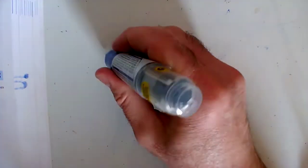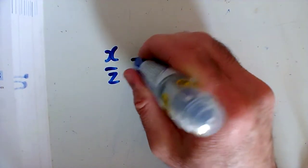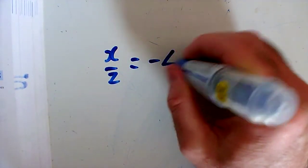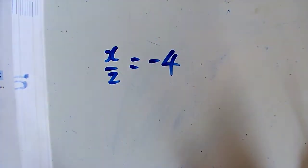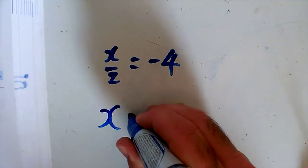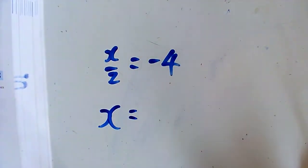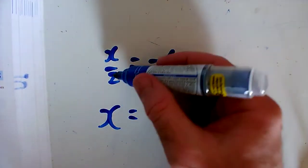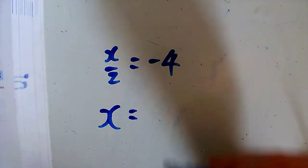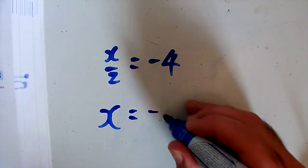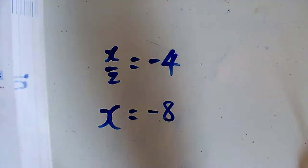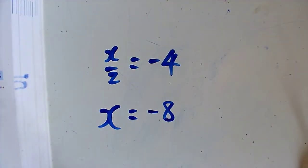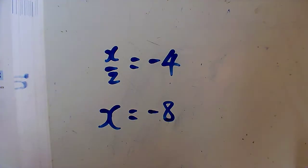Question E: x over 2 equals minus 4. I don't want to know what x over 2 is — I want a whole x. So multiplying both sides by 2, x equals minus 8.